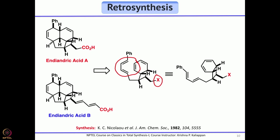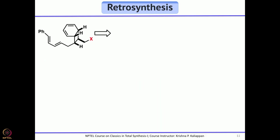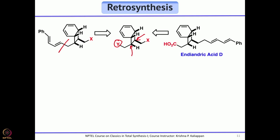Breaking a bond in the intermediate reveals two different substituents attached to the cyclobutane: CH₂Y and CH₂X. Y can be easily homologated. Endiandric acid D can also be obtained from this intermediate by homologating X, while homologating Y gives the intermediate for other endiandric acids. Endiandric acid G can also be obtained from the same intermediate through functional group manipulation.